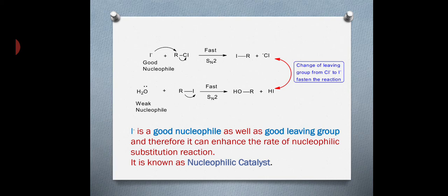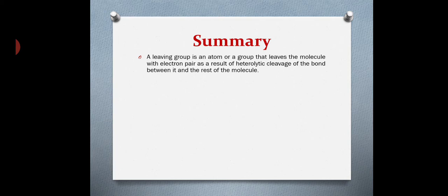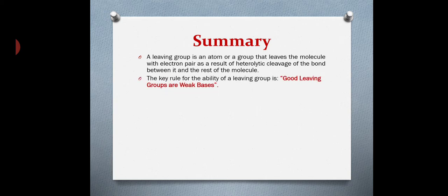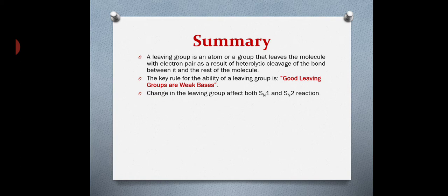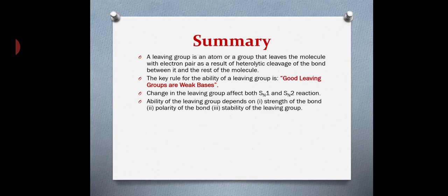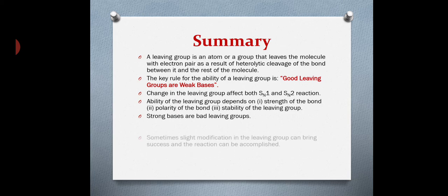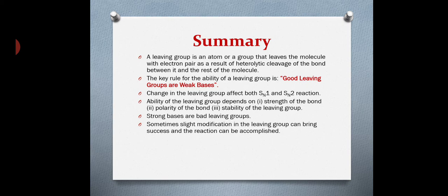In summary, a leaving group is an atom or group that leaves the molecule with an electron pair as a result of heterolytic cleavage of the bond between it and the rest of the molecule. The key rule is that good leaving groups are weak bases. Change in the leaving group affects both SN1 and SN2 reactions. The ability of the leaving group depends on bond strength, bond polarity, and the stability of the leaving group. Strong bases are bad leaving groups, but slight modification can convert a poor leaving group into a good one.